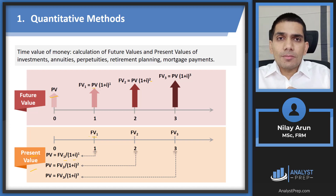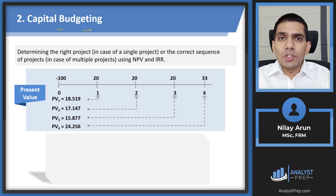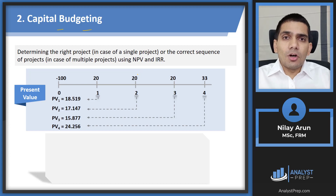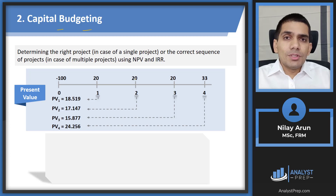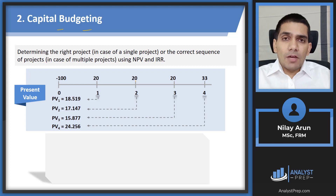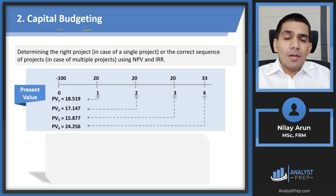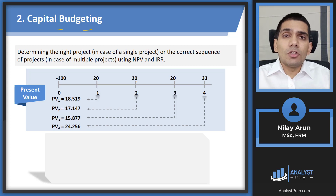Next, let's look at capital budgeting in corporate finance, where we have the concepts of NPV and IRR — the net present value and the internal rate of return. We use these concepts to select the best possible project. If we have multiple projects, we select the one with the highest NPV. If your NPV is negative, you reject the project. If all of them have negative NPVs, you reject all of them — there's no compulsion to select any.